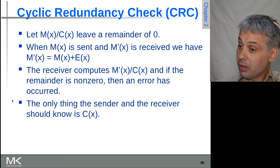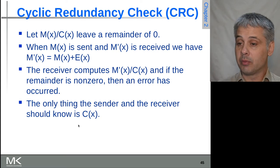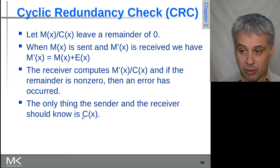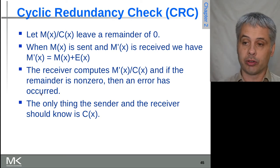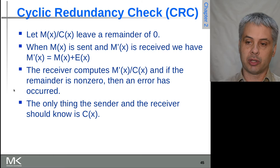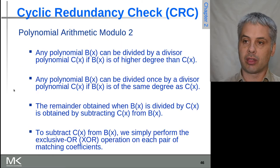Both the sender and the receiver need to know c(x) in order to be able to perform this computation at both ends.